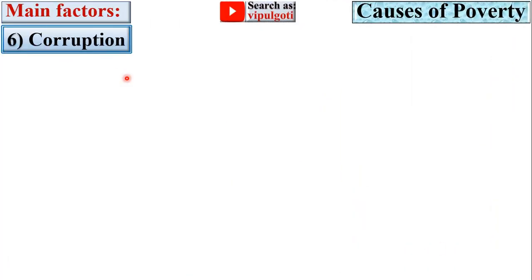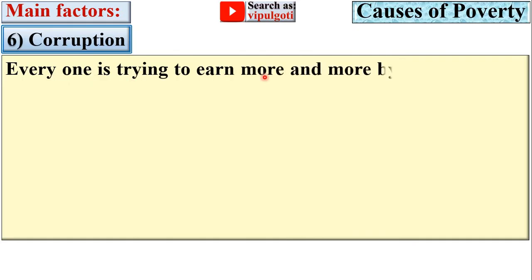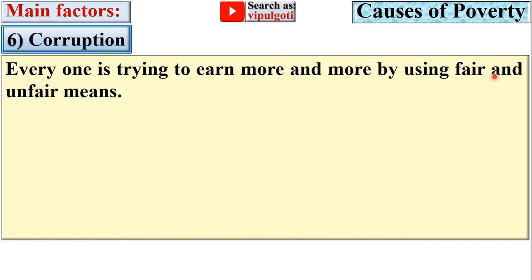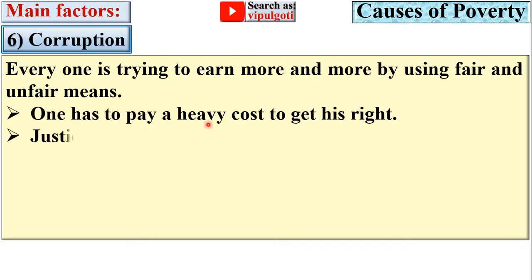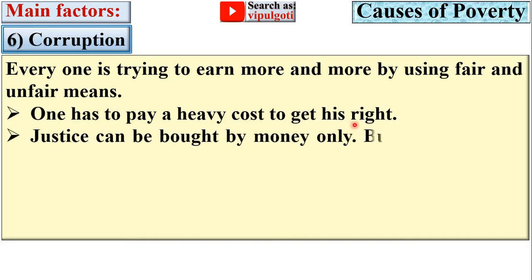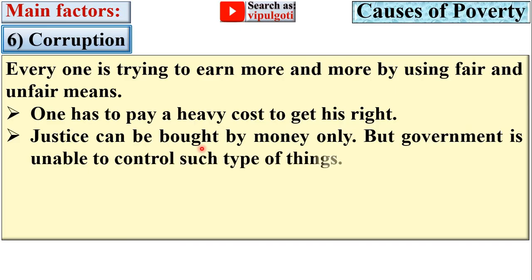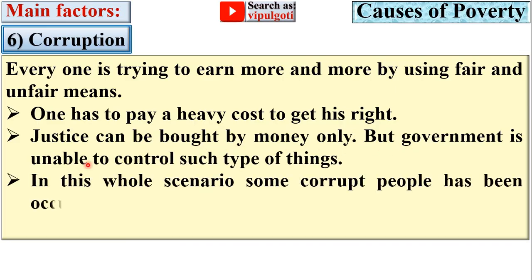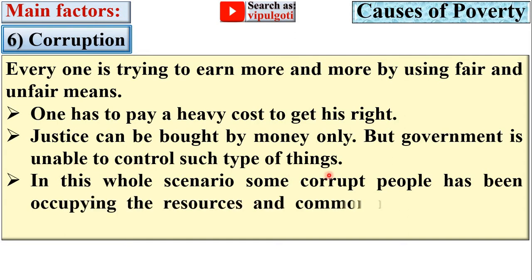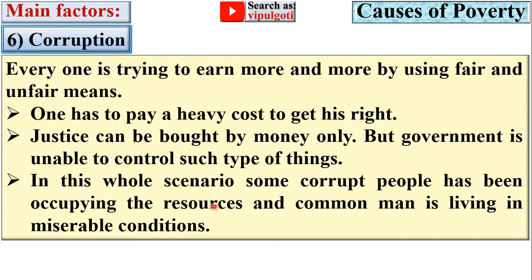Next, corruption. Everyone is trying to earn more and more by using fair and unfair means. One has to pay heavy costs to get his rights, and justice can be bought by money only. The government is unable to control such things. In this whole scenario, some corrupt people have been occupying the resources while the common man is living in miserable conditions.